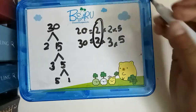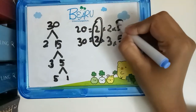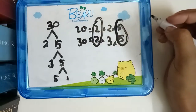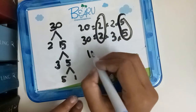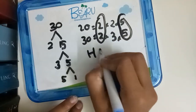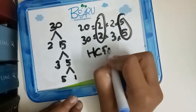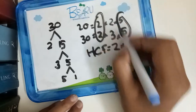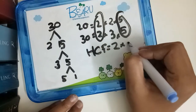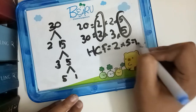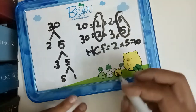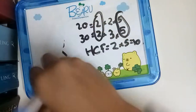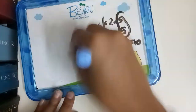Looking at the factors: 2 and 2 match up, and 5 and 5 match up. So the HCF is equal to 2 multiplied by 5, which equals 10. So the HCF of 20 and 30 is 10. Now why don't we try another problem?